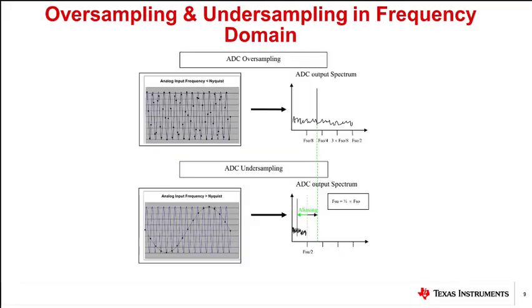Now let's look at oversampling and undersampling in frequency domain. In both cases, same signal is sampled at different sampling frequencies. When the signal is oversampled, that is, the input frequency of the signal is less than half the sampling rate as stated by Nyquist theorem, the ADC outputs correct representation of the input signal.